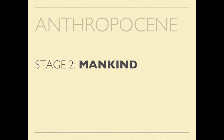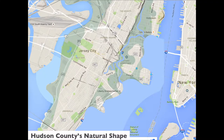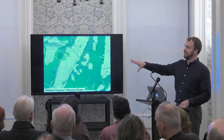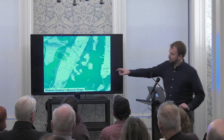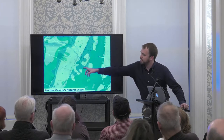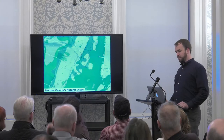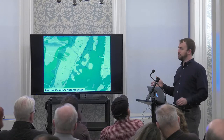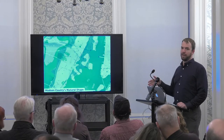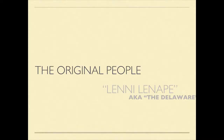With that happy bit of news, we switch to mankind — the Anthropocene. Here's Hudson County's kind of natural shape. Where these green patches are is old tidal land. There's a creek that goes right here — Mill Creek — which was actually quite deep. In the 1770s, there's an ad for a 30-foot sailboat parked at Newark Avenue, meaning you could sail from Newark Avenue out into the harbor.